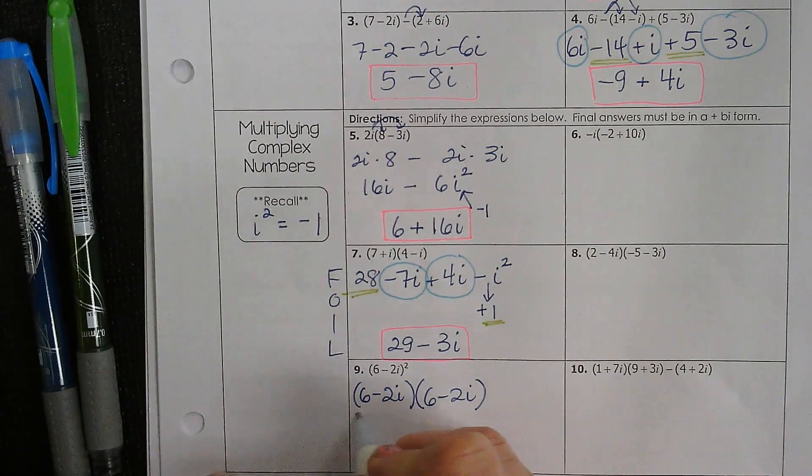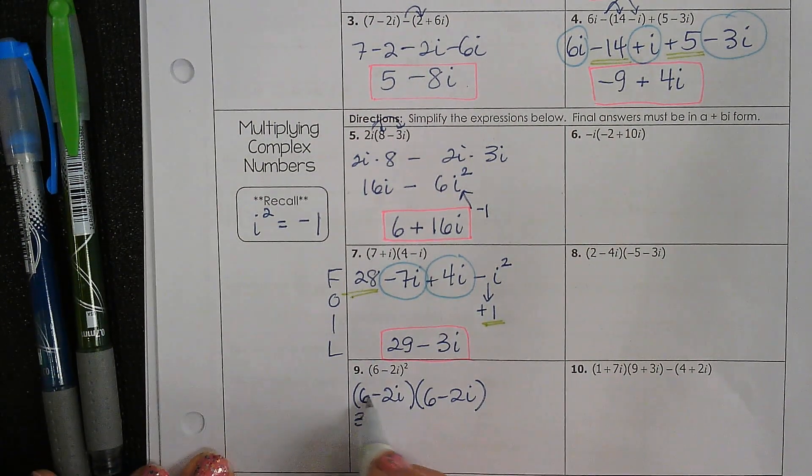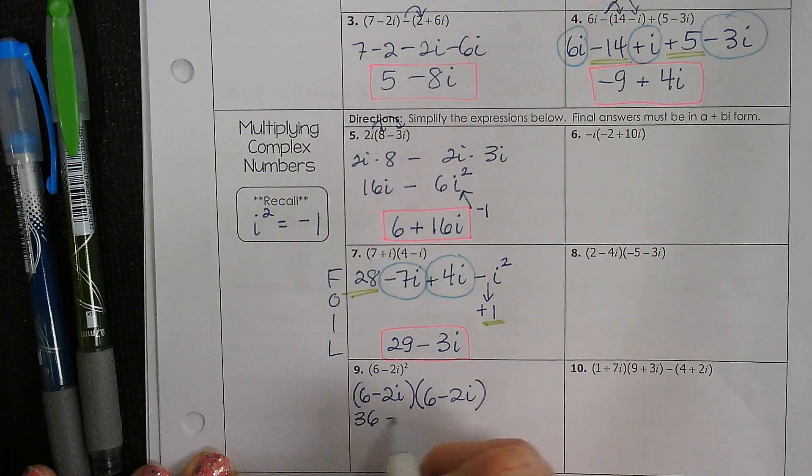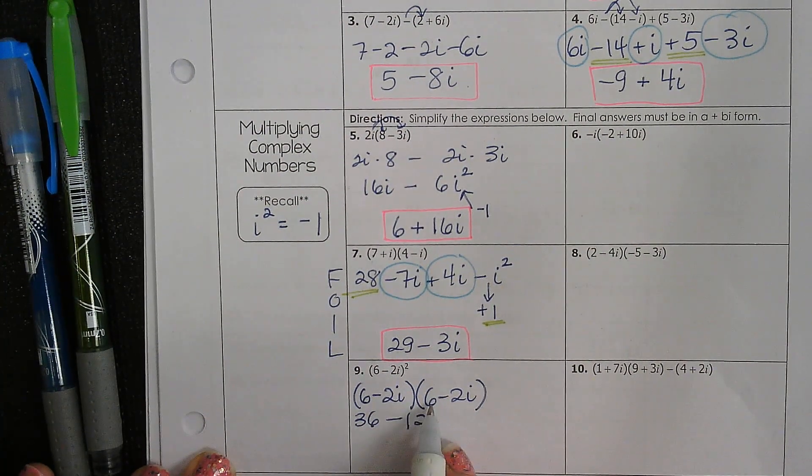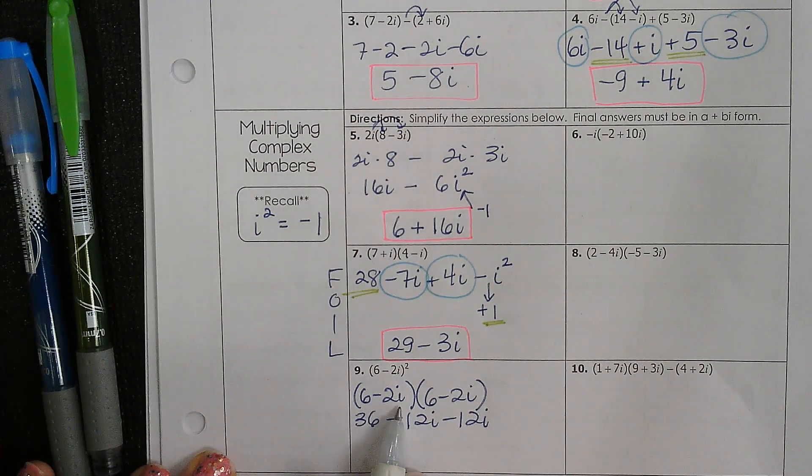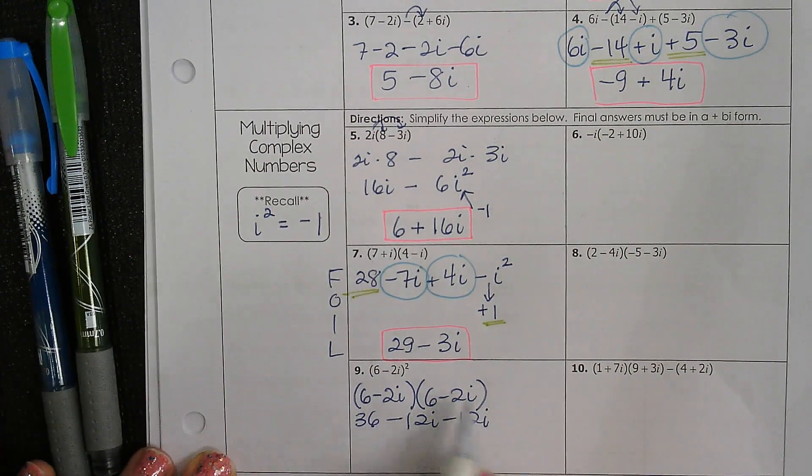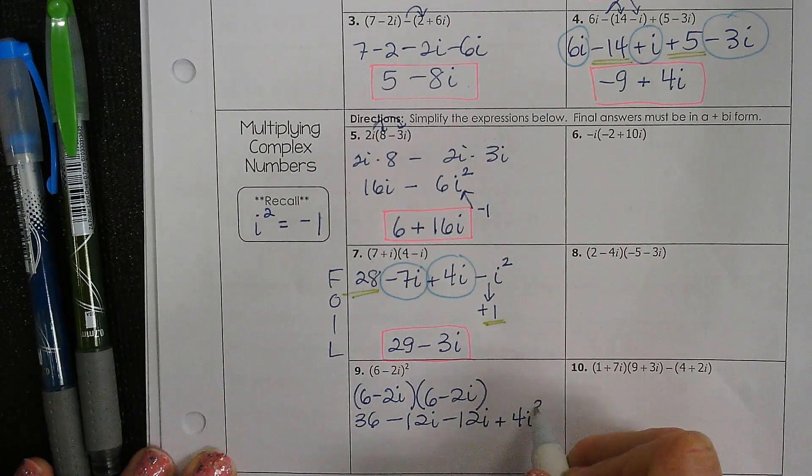6 times 6 is 36. The outsides are 6 times minus 2i. The insides are minus 2i times 6. And the last two are minus 2i times minus 2i. So that's plus 4i squared.